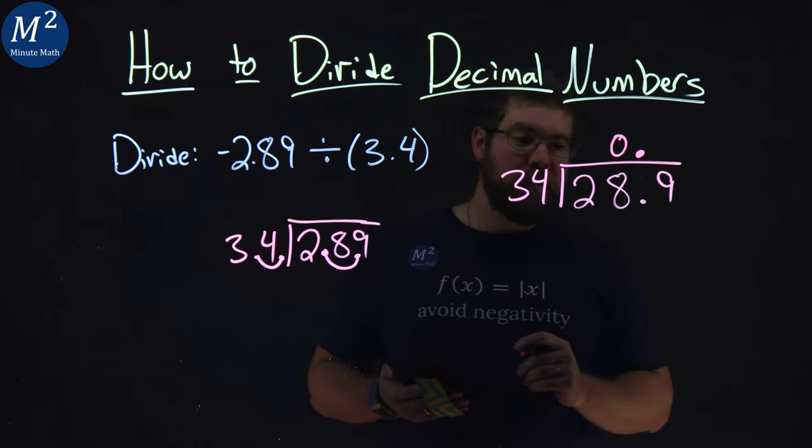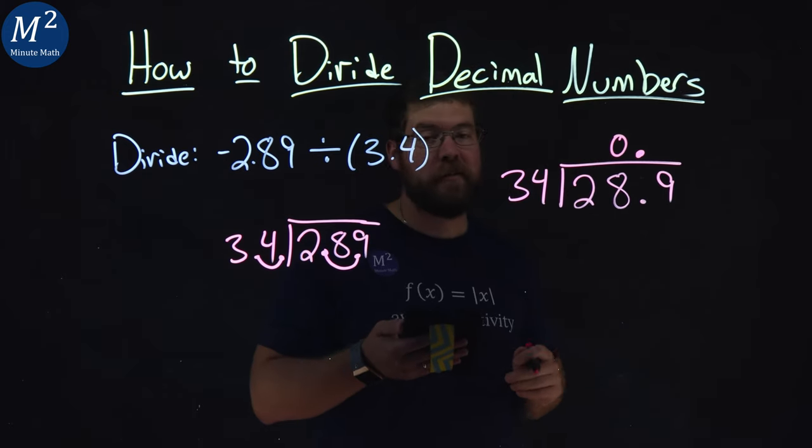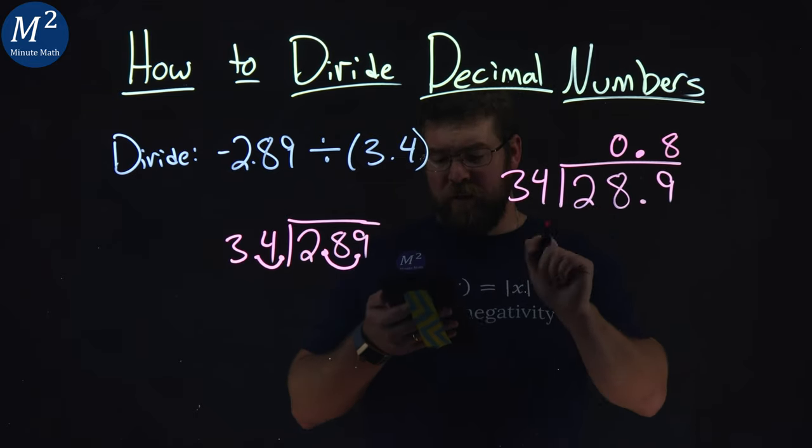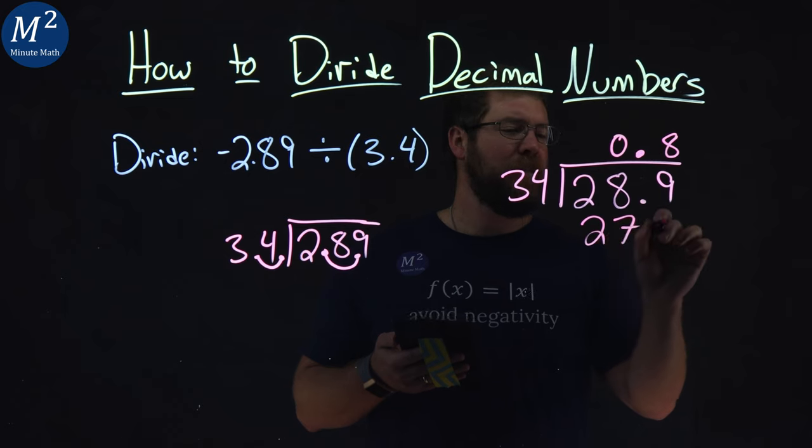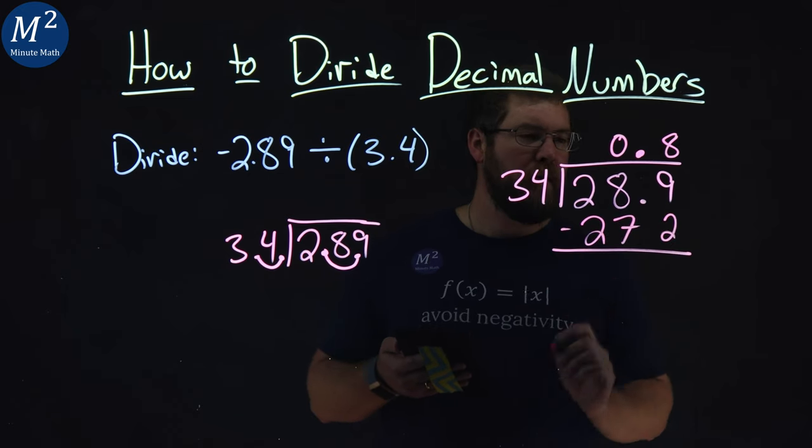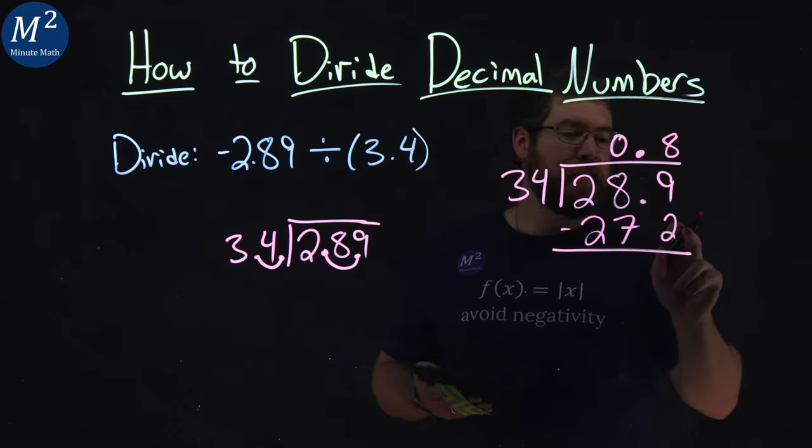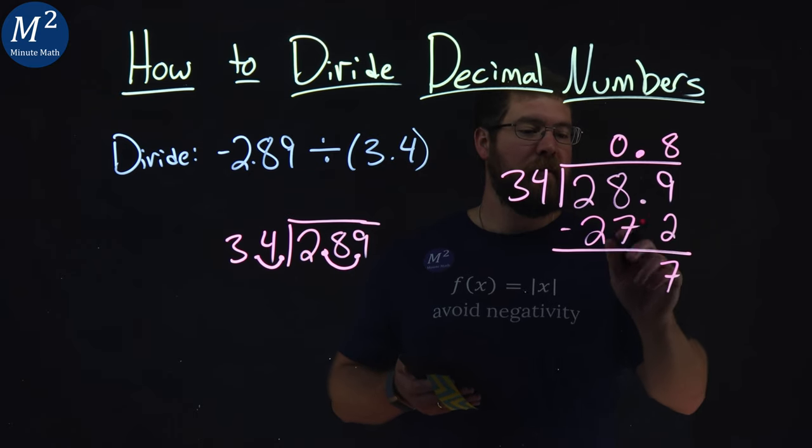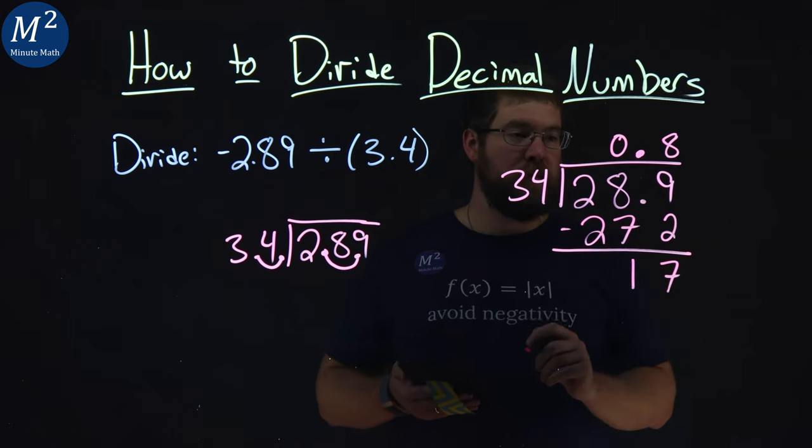Can 34 go into 289? I checked my notes because I don't know that off the top of my head. That's going to be 8 times. 8 times 34 is 272. Subtract the two numbers. 9 minus 2 comes out to be 7, 8 minus 7 is 1, and 2 minus 2 is 0.